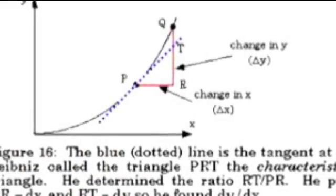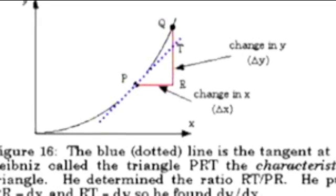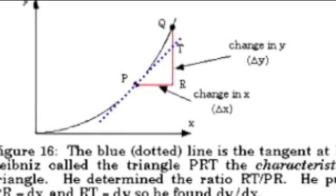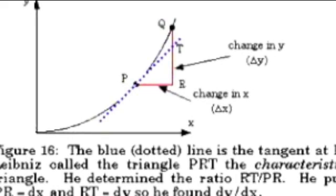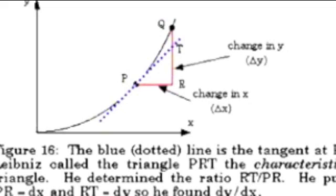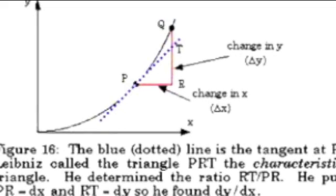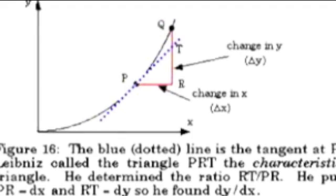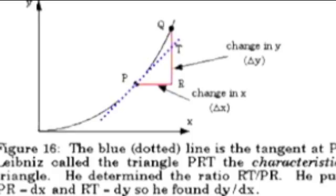Leibniz disagreed with Newton on the meaning of calculus. Leibniz discovered calculus by trying to find the tangent of a curve. This had been a popular exercise for mathematicians for centuries, but Leibniz was able to create a formal method for finding tangents by using calculus. Rather than seeing calculus as a model of the universe like Newton, Leibniz saw it as a divine explanation of change.